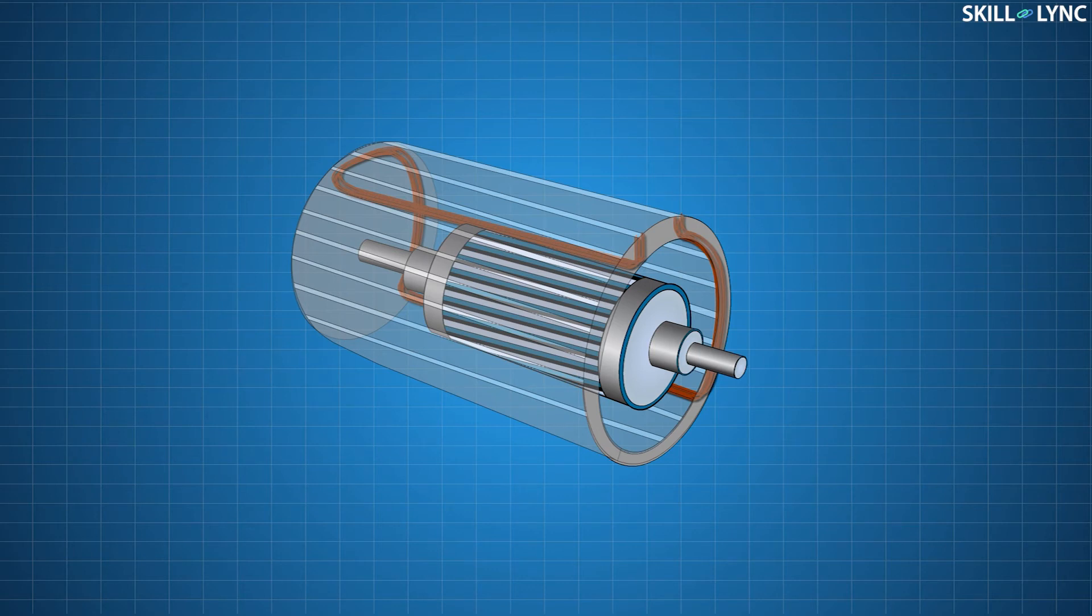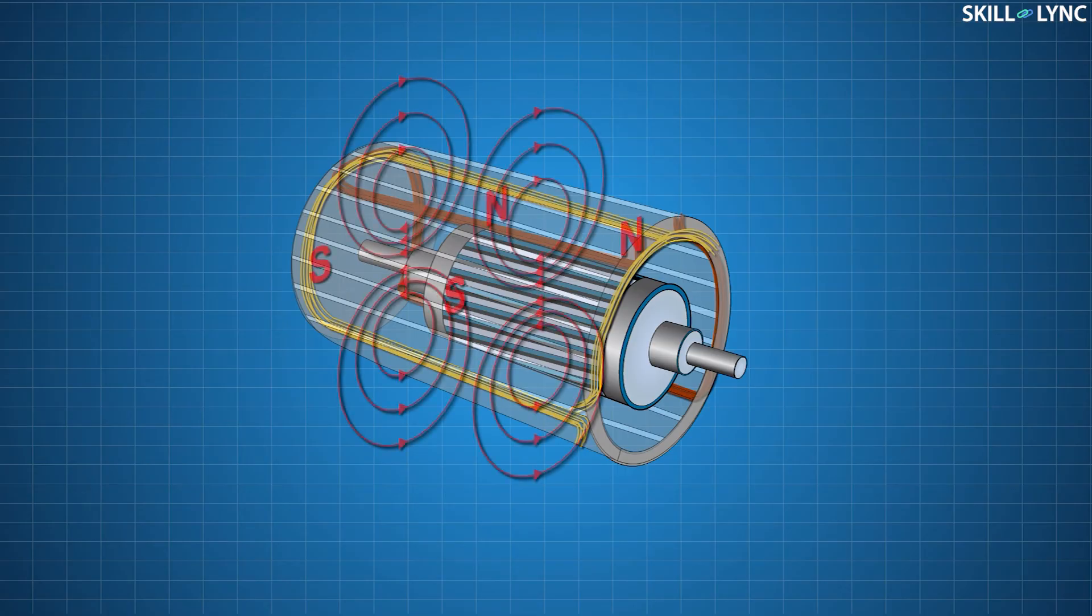The auxiliary winding is connected to an AC source and produces two magnetic fields like the main winding. Out of the two magnetic fields produced by the auxiliary winding, one pair of magnetic field being opposite to the main winding gets cancelled, while the other pair adds up to the magnetic field of the auxiliary winding.